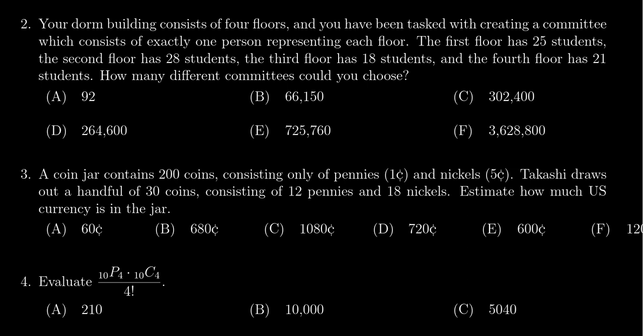The first floor has 25 students, the second floor has 28, the third floor has 18, and the fourth floor has 21 students. How many different committees can we choose?